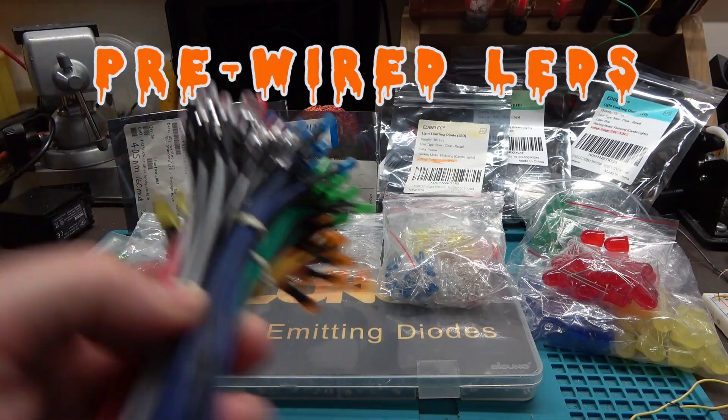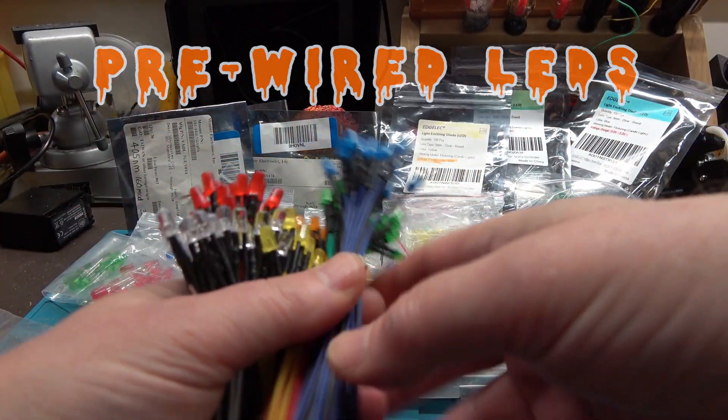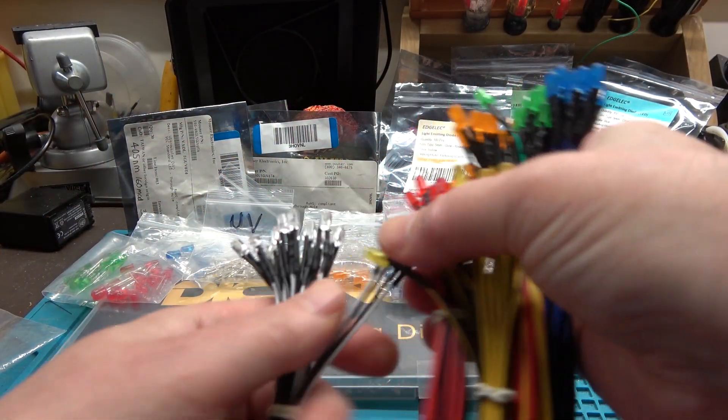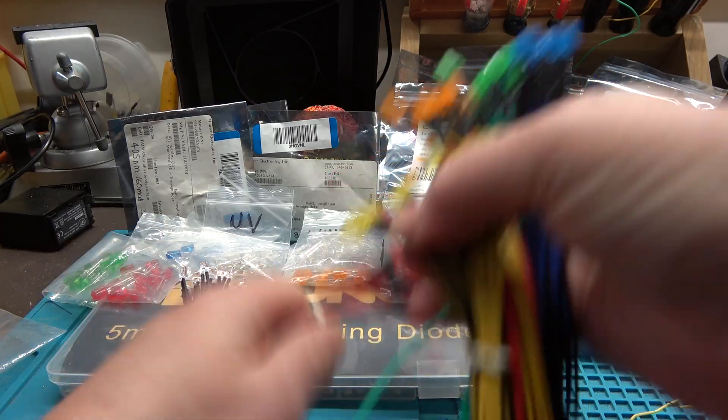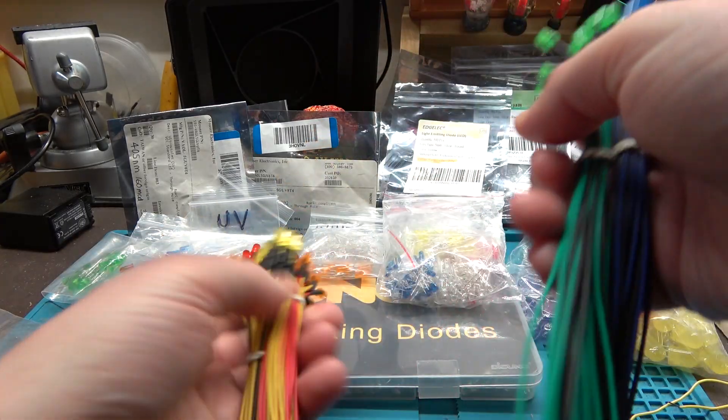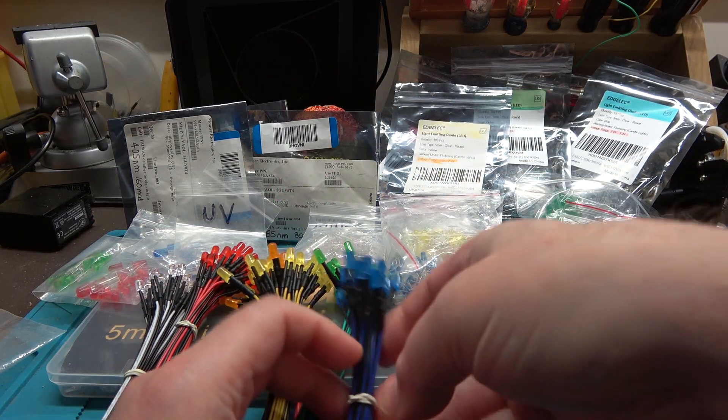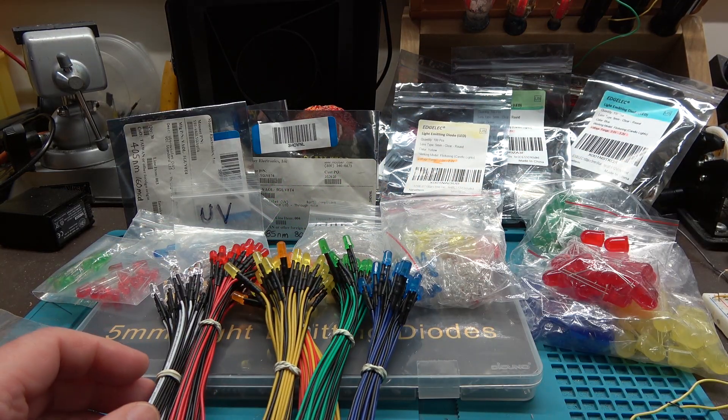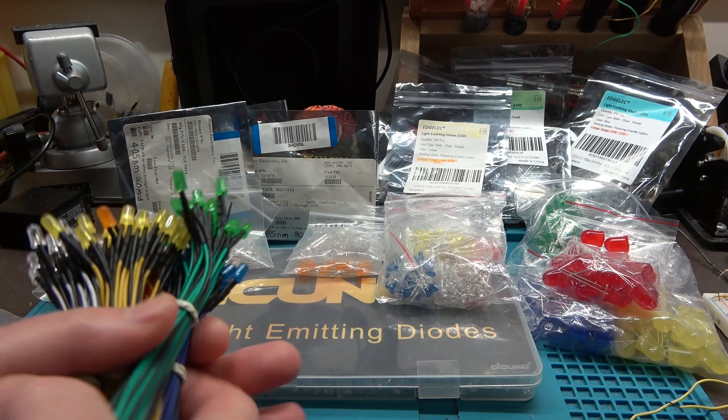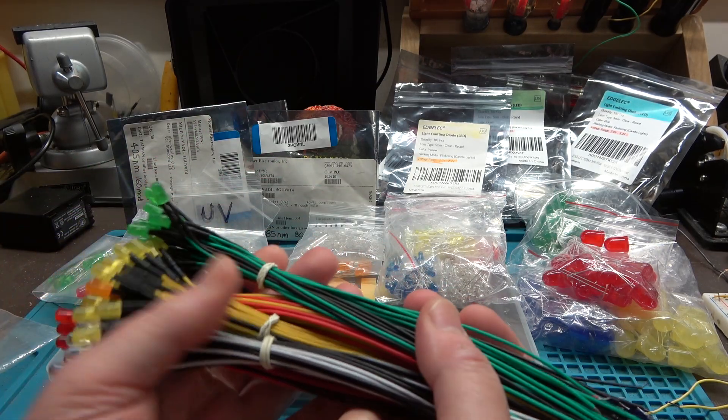By far pre-wired LEDs are the easiest to use in your projects. They take all the work out of making them because you do not need to solder the LEDs, select the proper resistor, and put the heat shrink tubing on them. They just light when power is applied in the correct direction. When you purchase your pre-wired LEDs, you must be careful to select the voltage that you will be connecting them to.